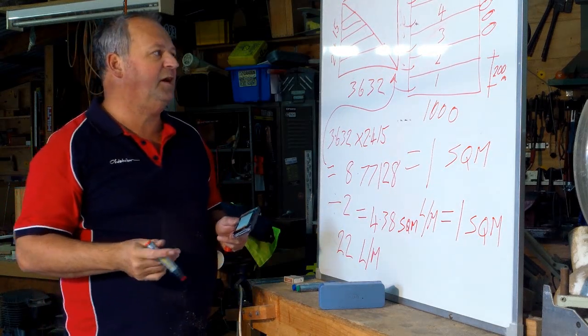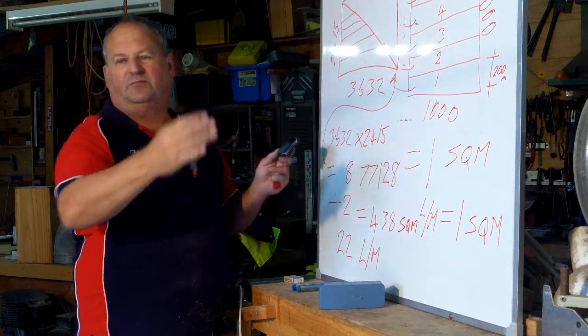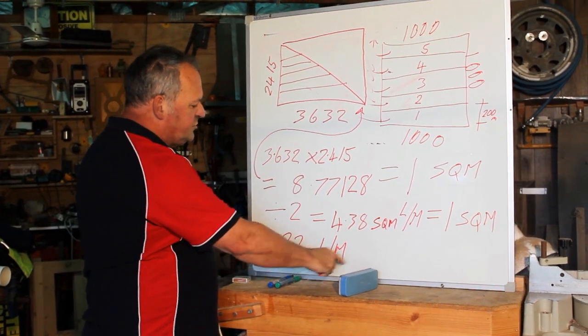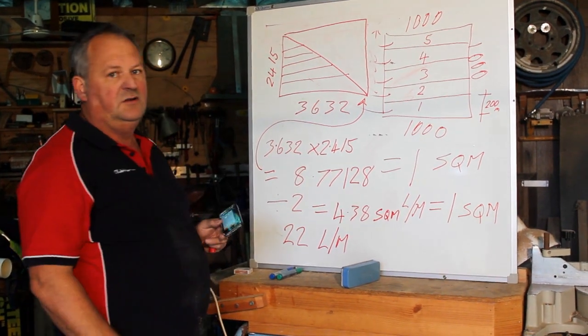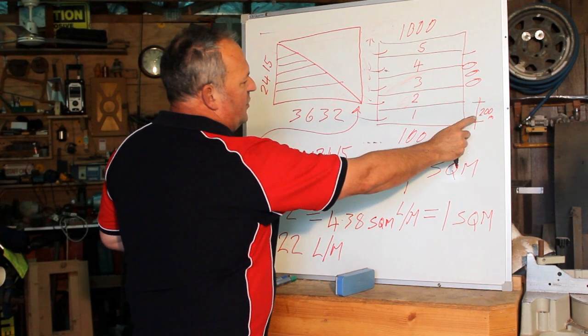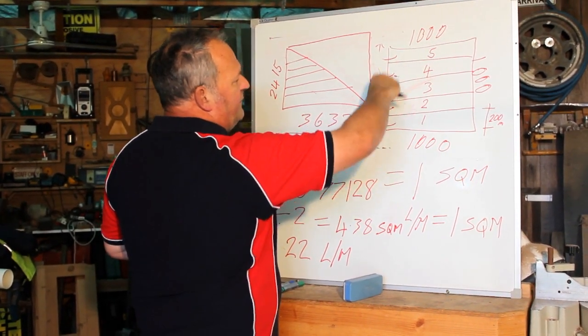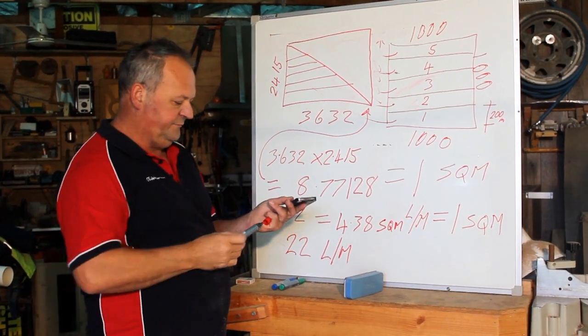In the real world, if we were doing that as a carpenter, we'd allow more for cottage and waste and working different bits and pieces. But, approximately, 22 lineal metres will cover that. If the boards are, as we decided, 200 mils across, which means that 5 of them cover 1 square metre.